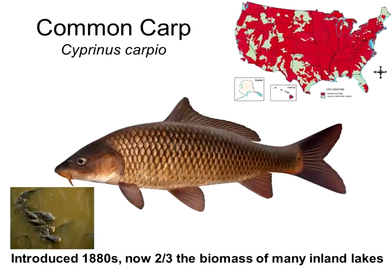Today we'll mostly talk about common Eurasian carp, with a little bit at the end on Asian carp. Common carp were introduced by the predecessor of the U.S. Fish and Wildlife Service after a huge congressional letter-writing campaign in the 1880s — a successful governmental introduction that resulted in huge economic and ecological devastation across the country. Common carp occupy shallow lakes and rivers across the entire U.S. and can comprise up to two-thirds of the biomass of many of these lakes, including in the Midwest.